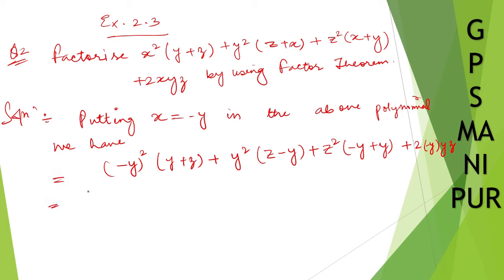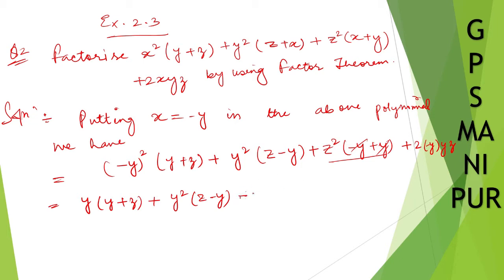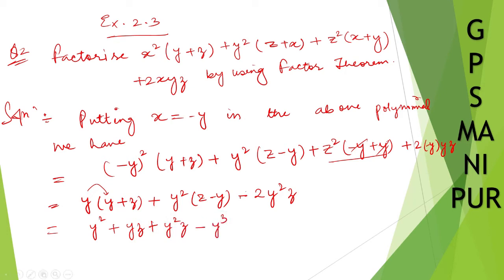So minus y squared gives y times (y plus z), plus y squared z minus y. This term becomes 0, so plus z squared times 0, and plus plus into minus minus gives minus 2y times y squared z. Let us multiply: y into y is y squared, plus y into z is yz, plus y squared z minus y cubed, and minus 2y squared z.